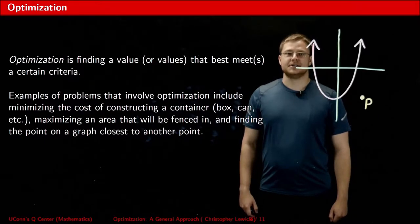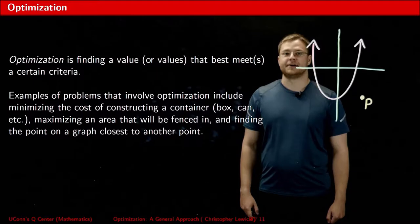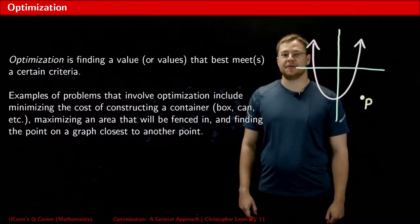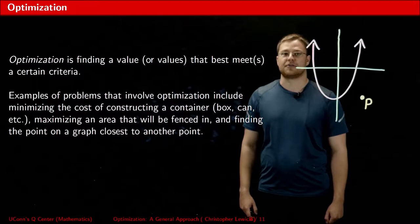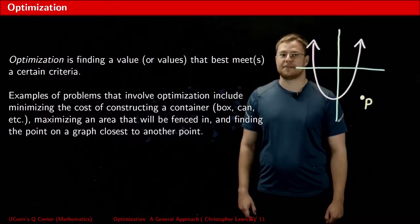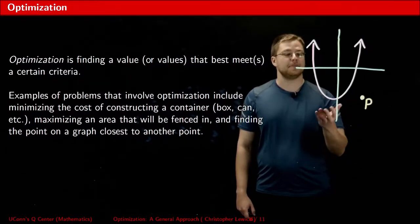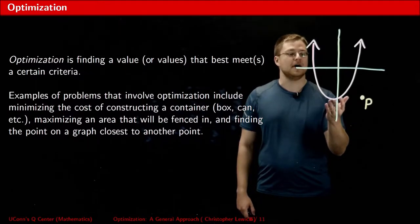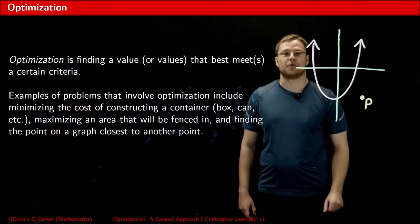In plain English, optimization is finding the values that best meet a certain criteria. Optimization is useful in a wide array of problems. For example, maybe you're thinking about constructing a box and you want to know what the dimensions of the box should be in order to minimize the cost of constructing the box. Or maybe you're planning on fencing in a certain area and you want to figure out how you can maximize the area that's going to be fenced in. Or maybe you're looking at the curve of a function and you're trying to figure out what is the minimum distance between the curve and some other point on the coordinate plane.